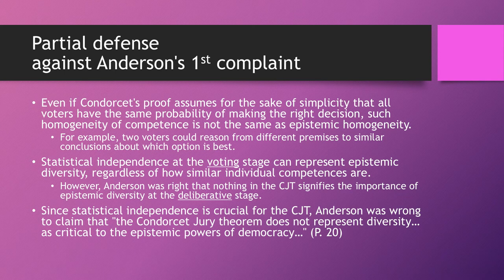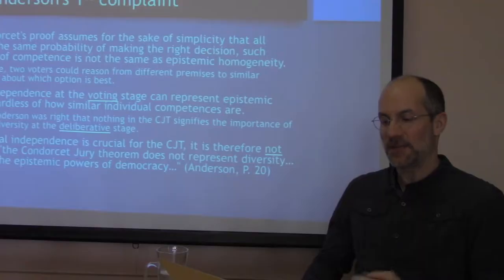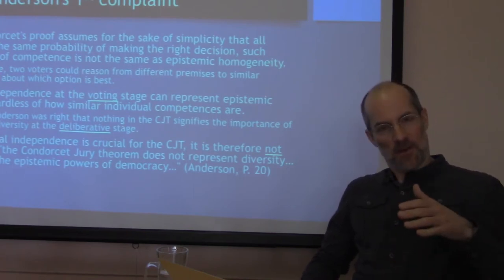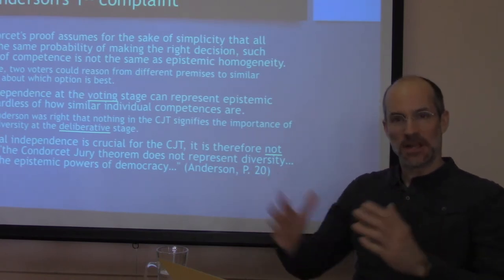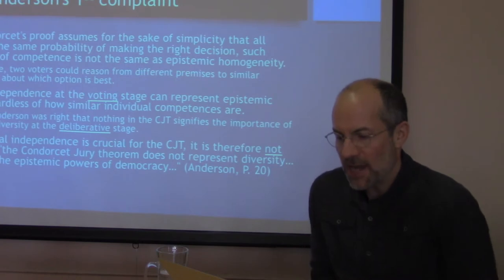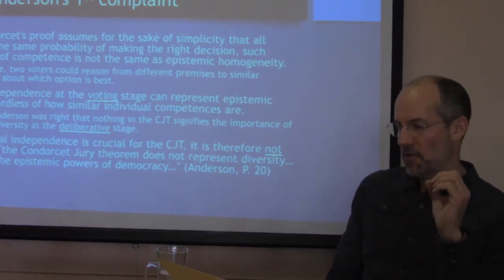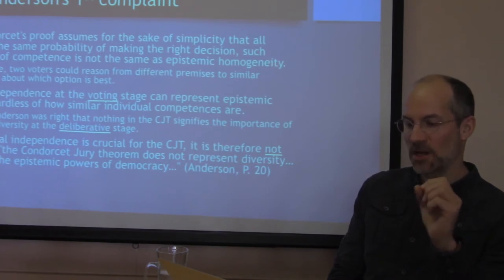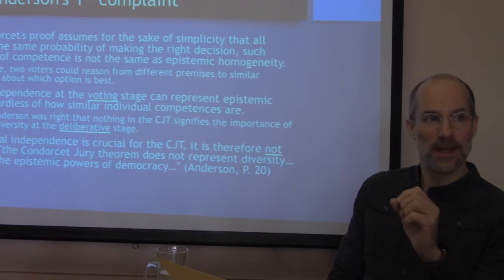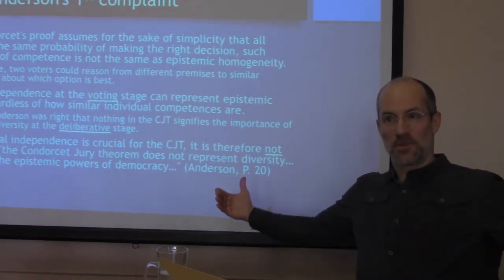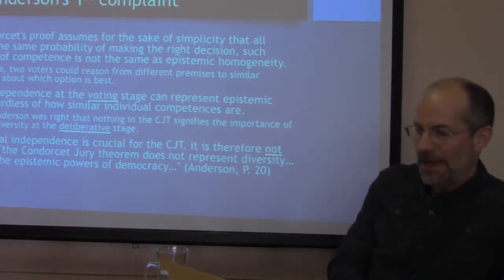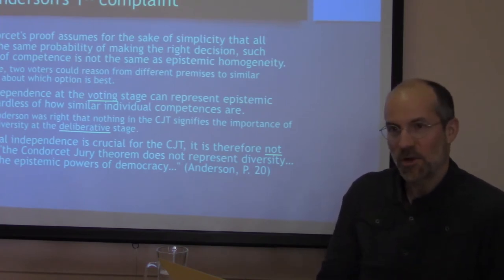I would submit a partial defense against Anderson's first complaint. Even if Condorcet's proof assumes for simplicity that all voters have the same probability of making the right decision, such homogeneity of competence — where we call the chance that somebody votes the right way their individual competence — homogeneity of competence is not the same thing as epistemic homogeneity. For example, two voters could reason from different premises to similar conclusions about which option is best, and I think we might agree it's epistemically diverse if they start from totally different premises, even if they end up with the same probability. So I think Anderson is wrong about this.